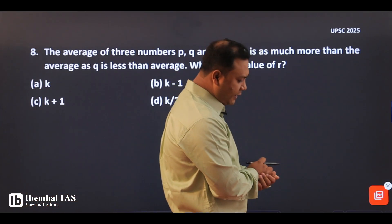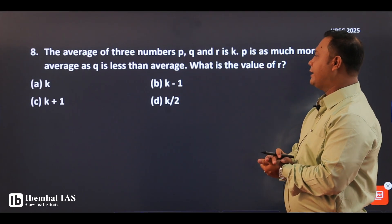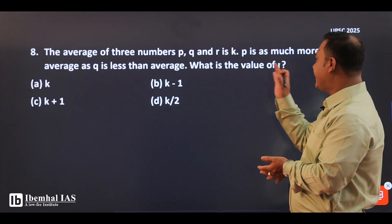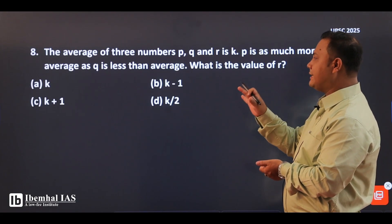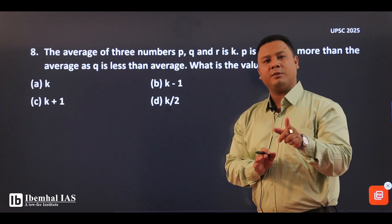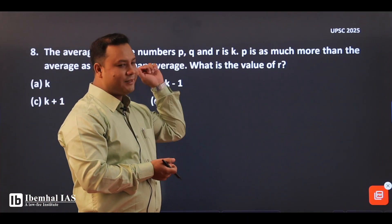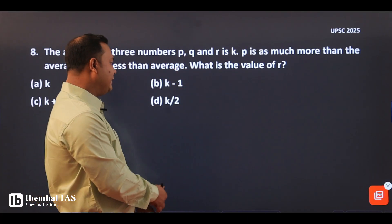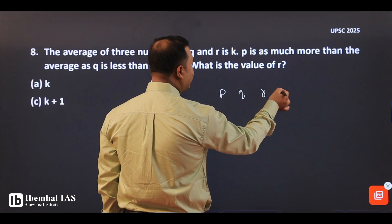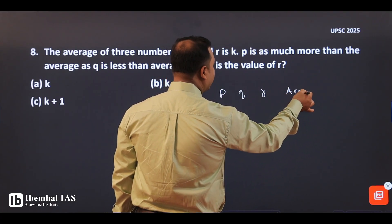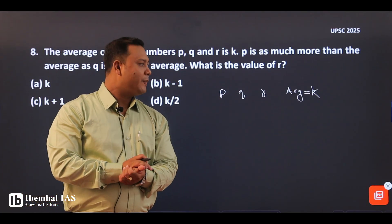The average of three numbers p, q, and r is K. P is as much more than the average as Q is less than the average. So p is above the average and q is below the average by the same amount. The average equals K, and p plus q divided by their relationship gives the balance.